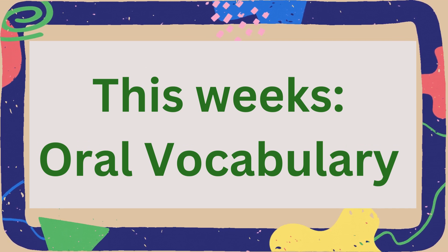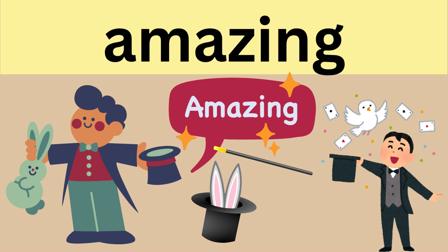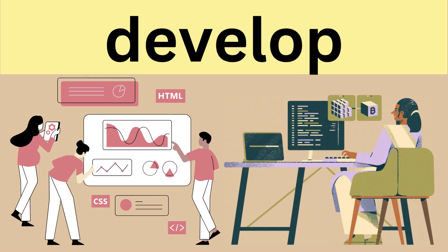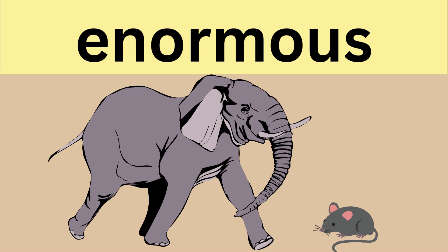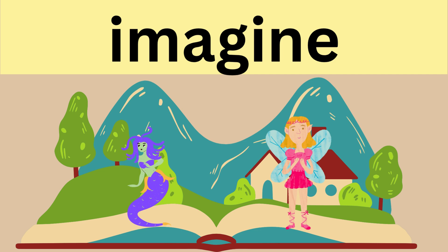Lastly, we will look at the oral vocabulary words that you will hear in this week's reading story. The first word is amazing — amazing means causing great surprise or wonder. The second word is develop — develop means taking what something is now to make it better or more complete. The third word is content — content means when you are content, you are happy with what you have. The fourth word is enormous — enormous means when something is enormous, it is very large in size or amount. Imagine means when you imagine something, you make an idea or picture of it in your mind.